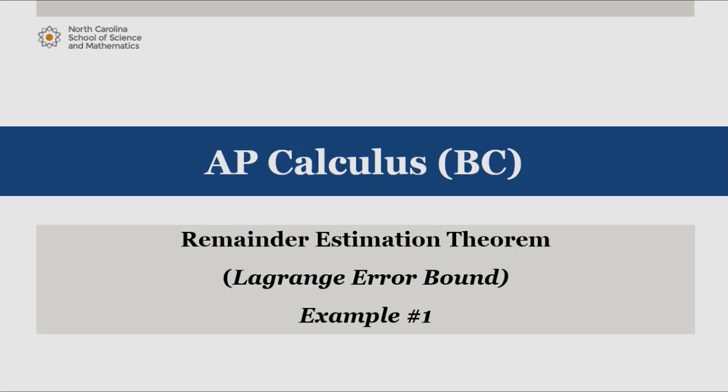In this video, we're going to apply the remainder estimation theorem, otherwise known as the Lagrange error bound, to find a bound on the error associated with using the sixth degree Taylor polynomial centered at x equals zero to approximate the function cosine of x on the interval negative three-fourths to three-fourths.